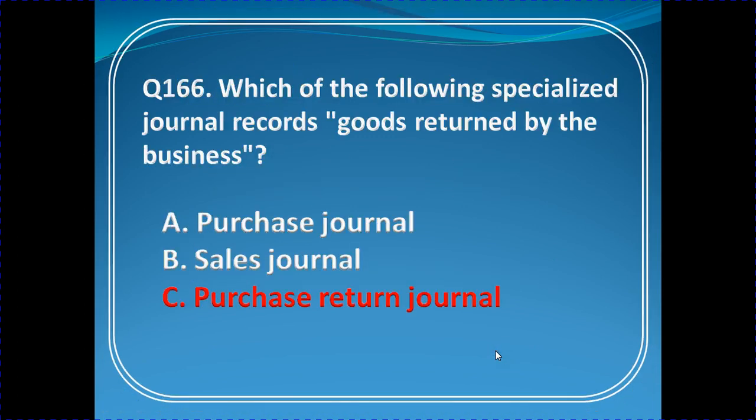Question 166: Which of the following specialized journal records goods returned by the business? Business means purchase returns — we are returning the goods which were supplied by a supplier.